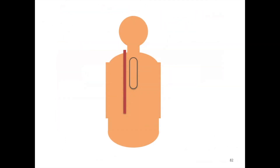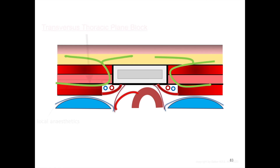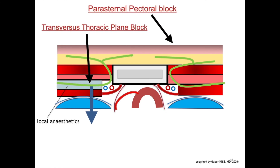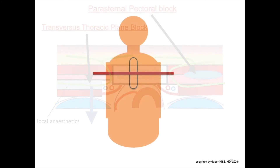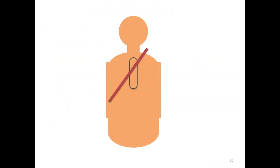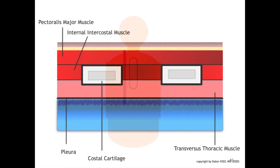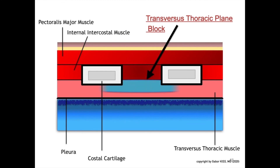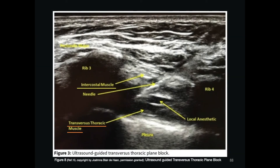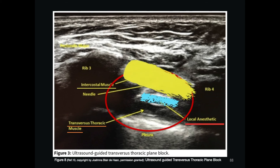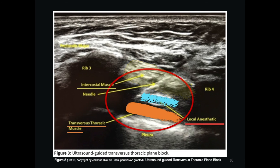Leaving the sagittal cross-section view to look at the local anesthetic spread in a transverse cross-section view, and then going back to the sagittal parasternal cross-section view, we can see the spread of local anesthesia in a TTP block. This ultrasound real image shows the injection of local anesthesia into the transverse thoracic plane, with the spread of local anesthesia between the internal intercostal muscle and the transverse thoracic muscle.